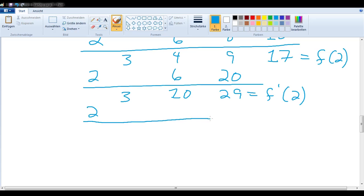And then we do a few more levels: 3, 6, 16. That's f double prime of 2 divided by 2 factorial. Don't forget that part.